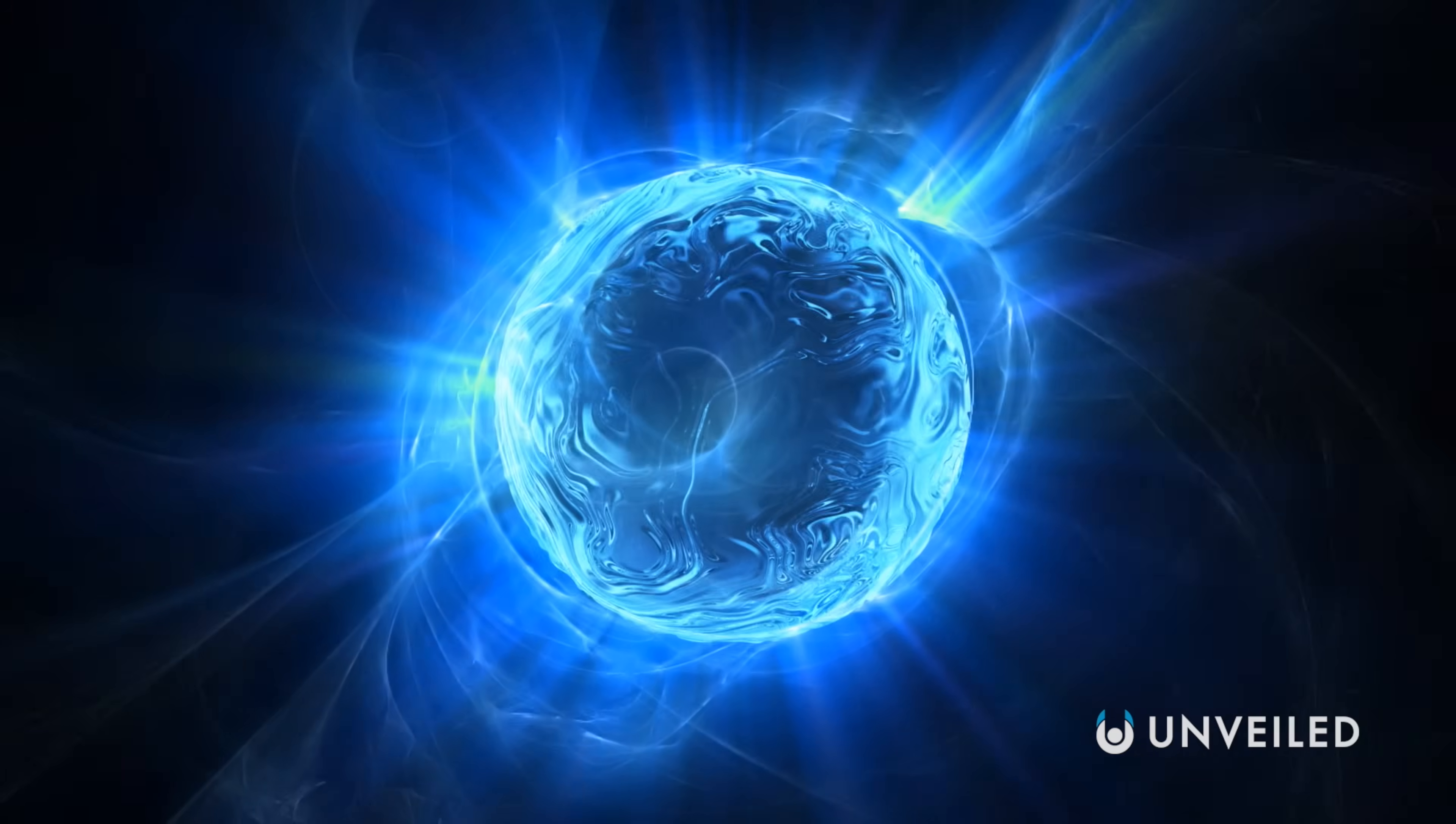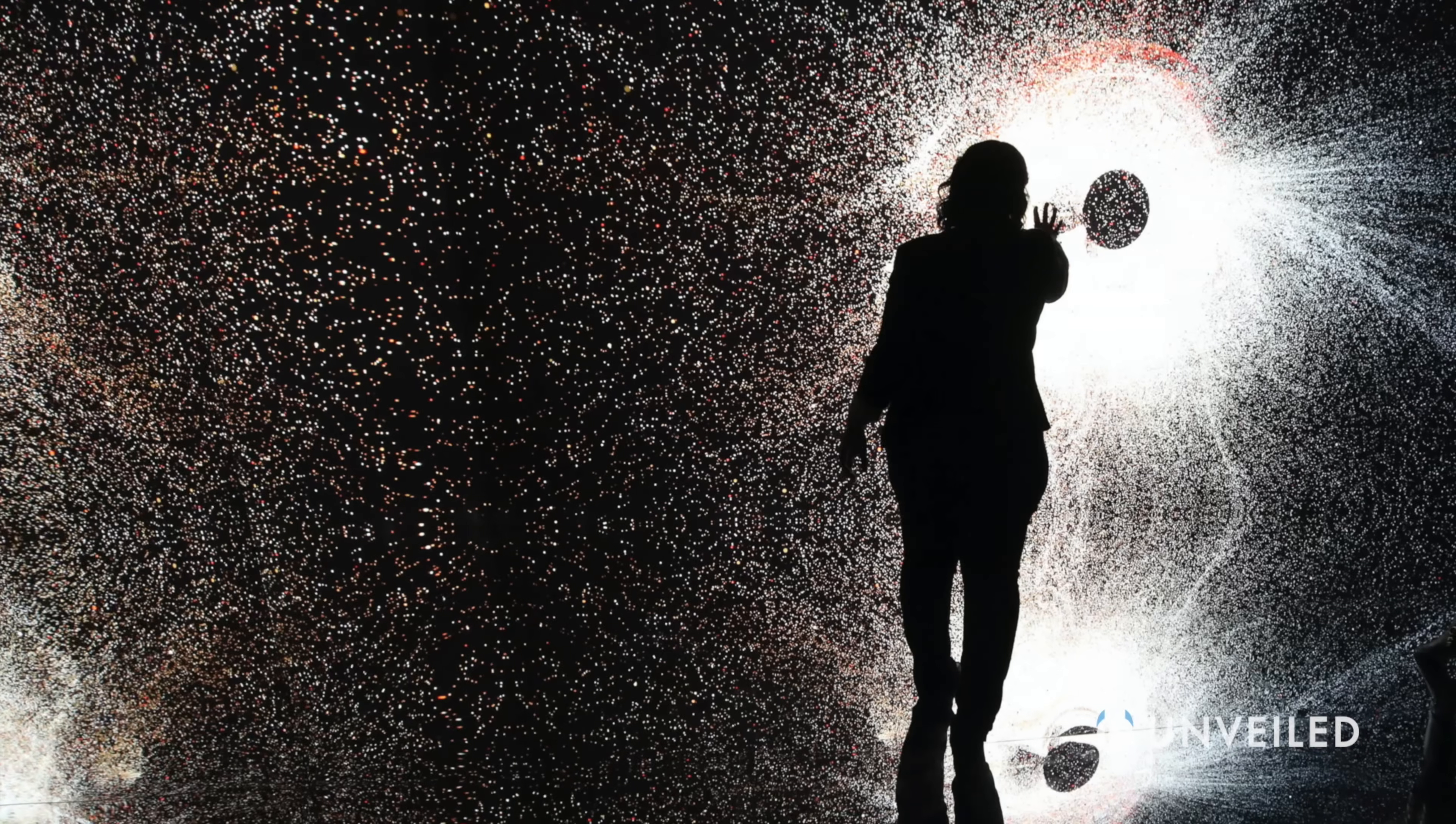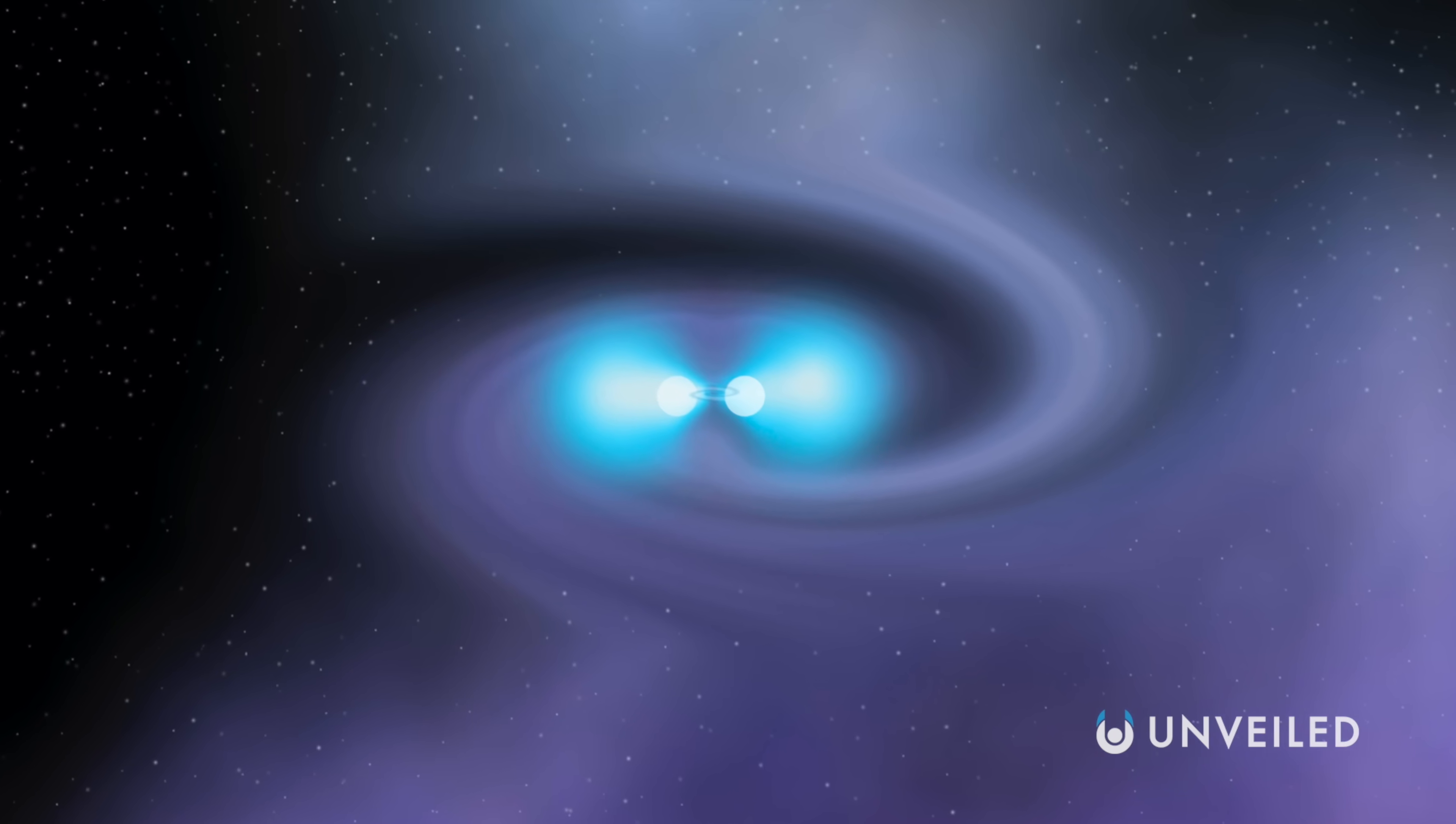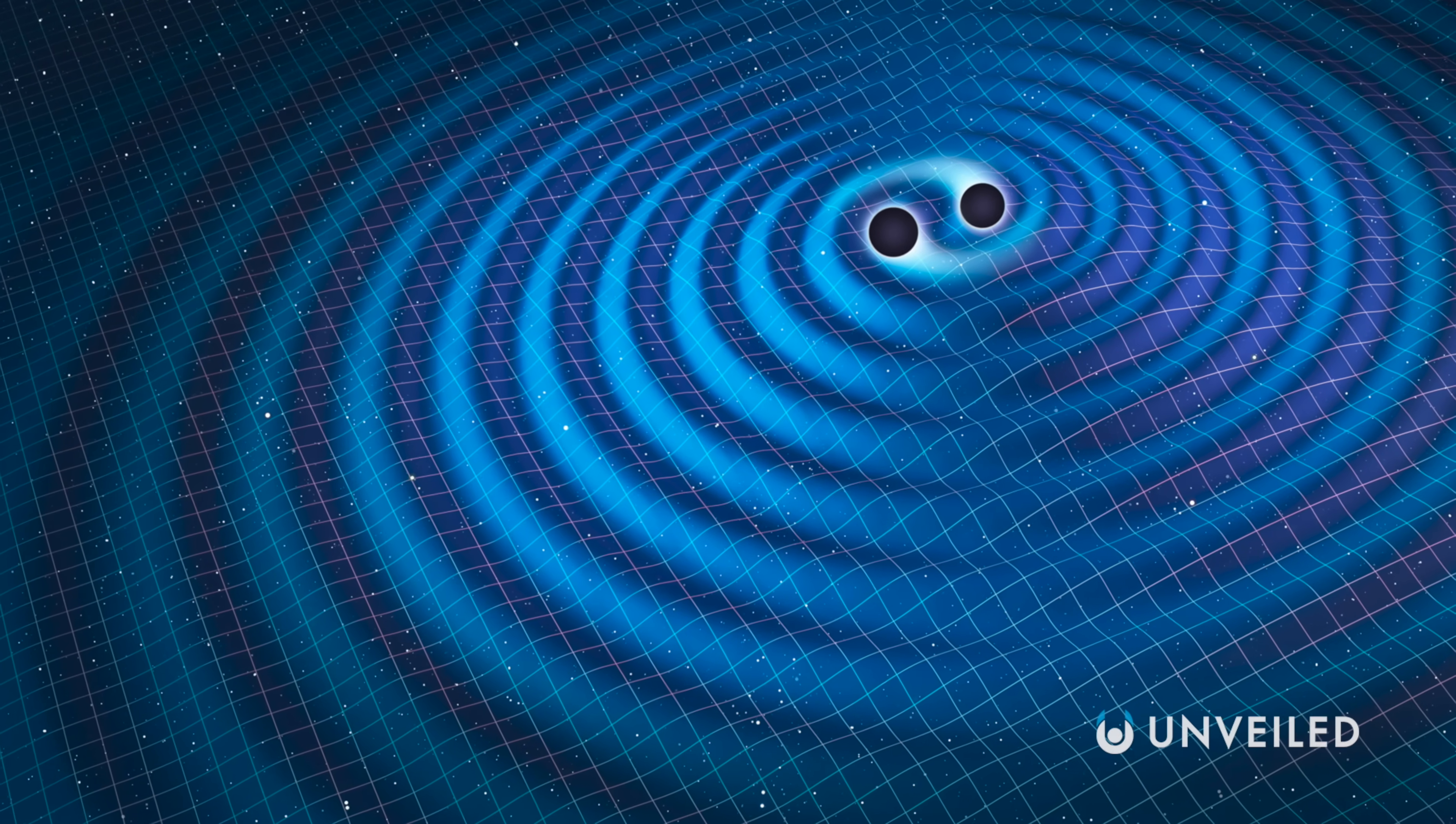But still, beyond even that, the two most powerful events in the known universe are gamma-ray bursts and supermassive black hole collisions. Gamma-ray bursts are essentially high-energy jets of gamma-level light that zap through space, which scientists still don't properly understand. Meanwhile, supermassive black hole collisions are so powerful that they create invisible ripples in actual spacetime, and it's these that we call gravitational waves.